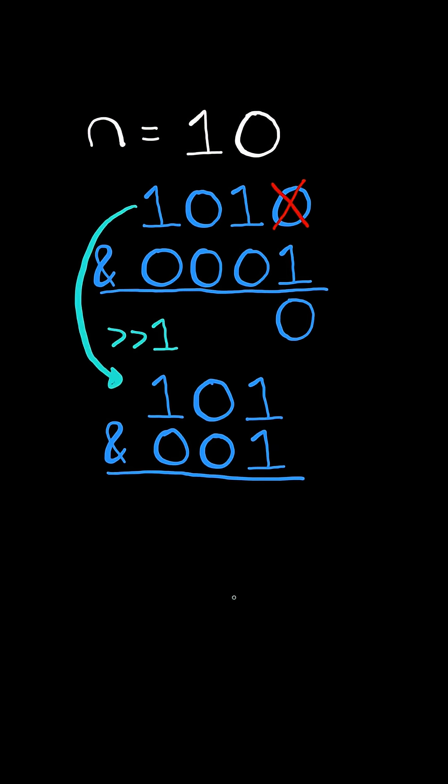We then continue the process and bitwise AND the number by 1. Once again, this gives us the last digit, and we compare it with the previous digit. As long as they are alternating, we continue.